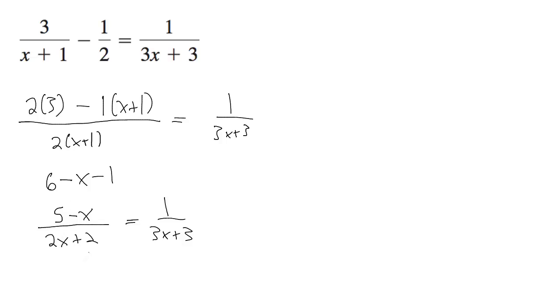Let's do a couple things here. We can reciprocate everything, or we can just cross multiply. We'll just cross multiply, so we get 5 minus x times 3x plus 3 is equal to 2x plus 2.